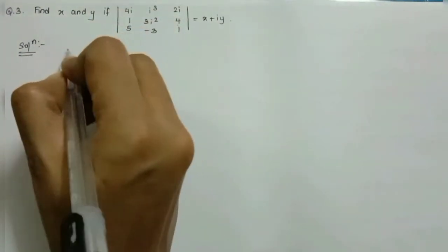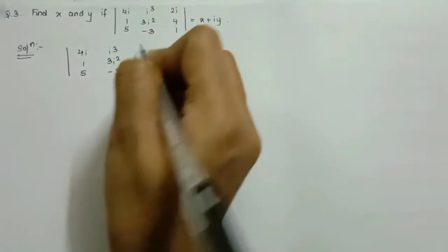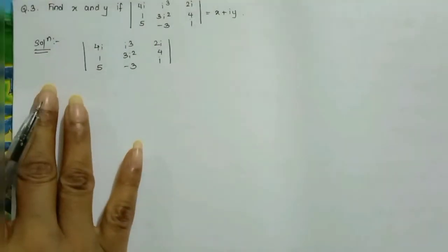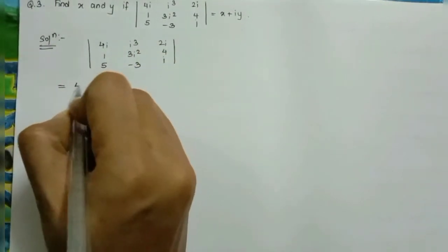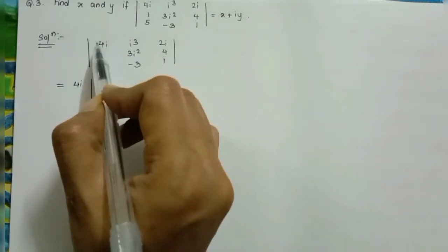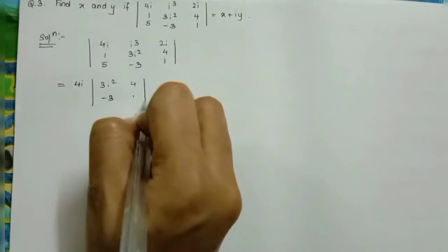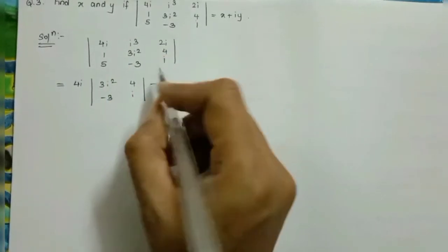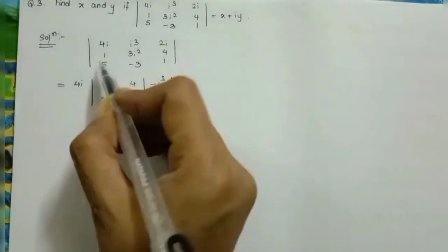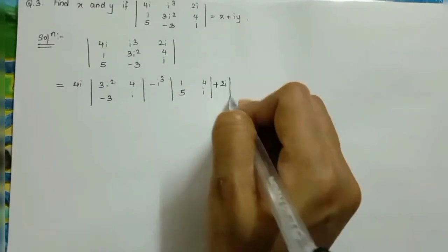Considering the given determinant with element 4i in the first row, first column. We expand: 4i times its minor (eliminating first row and first column, giving four elements). Then minus i³ times its minor (elements: 1, 5, and 4i). Then plus 2i times its corresponding minor elements.